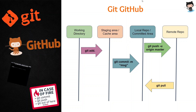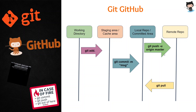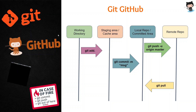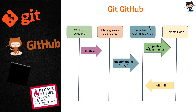After it goes to the committed area, we need to move it to the remote area — we say we need to push the file to the remote repository. For that we write 'git push -u origin master'. Similarly, if you want to pull, you go to the remote repository, write a pull command, and your file is pulled to the local repository. So this is the entire architecture of Git.